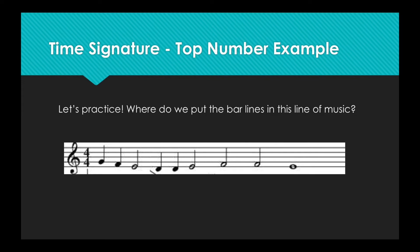So let's practice. Looking at this line of music, we can see that there are no bar lines — where should we put them? Since the top of the time signature is 4, we know that there are 4 beats in between each bar line. Let's count the beats: 1, 2, 3, 4. That's 4 counts. Let's put a bar line there. Let's count again: 1, 2, 3, 4. That's 4 counts, so let's draw another bar line.